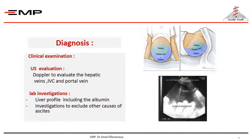The diagnosis of ascitis is based on clinical examination as well as ultrasound for evaluation of the amount of ascitis and Doppler to evaluate the patency of hepatic veins, inferior vena cava, and portal vein. Lab investigations are used for assessment of the liver profile including albumin, and to exclude other causes of ascitis.